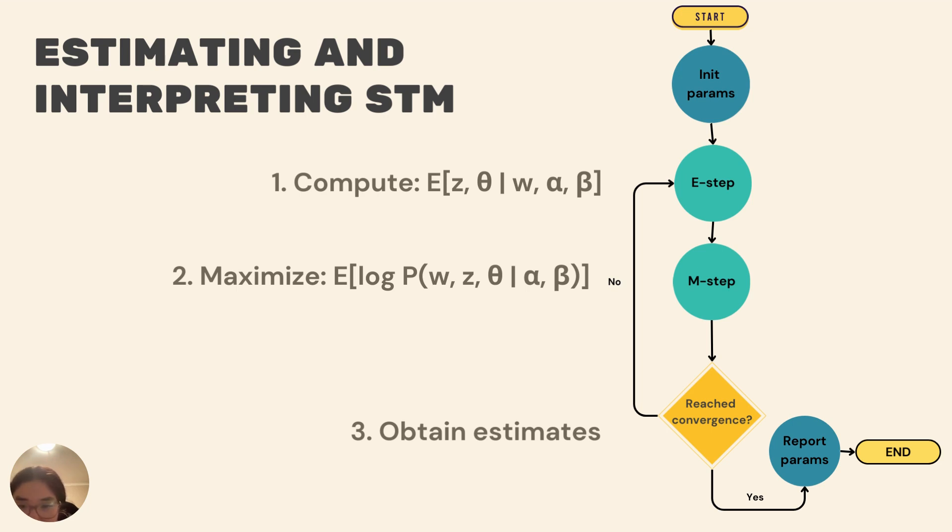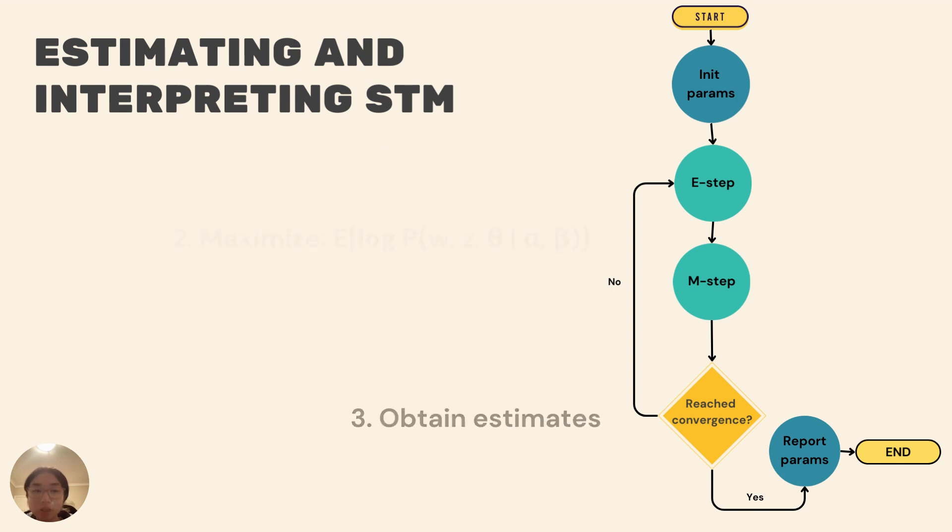In the M-step, we update the model parameters by maximizing the expected complete data log likelihood, a function of the expected values calculated in the E-step. The variational EM algorithm converges to an approximate solution for the STM model, providing us with estimates of topic prevalence, topic content, and the relationship between topics and covariates in the documents.